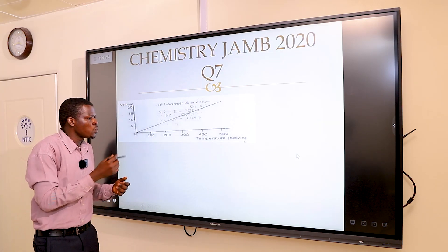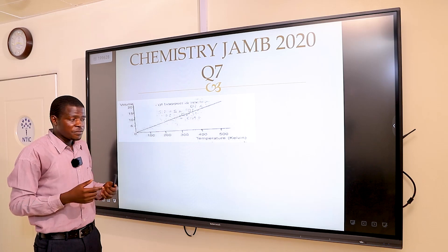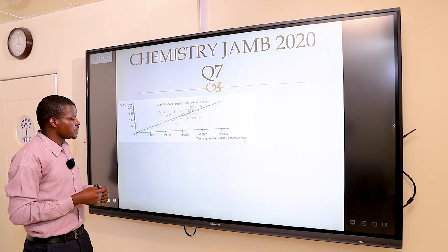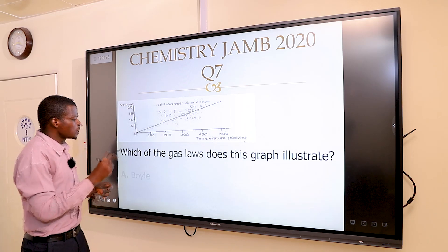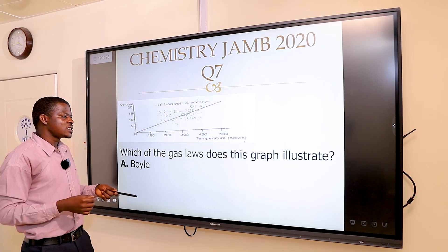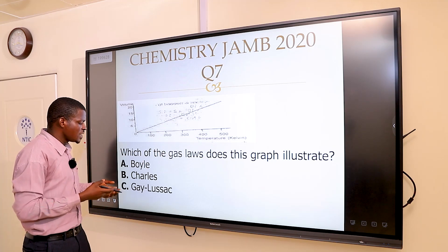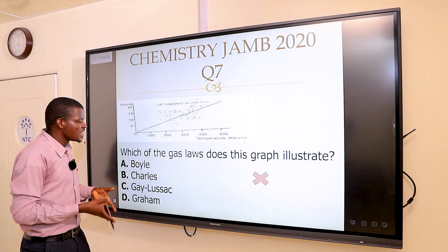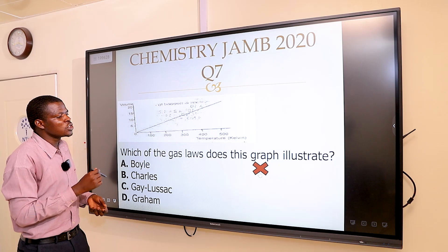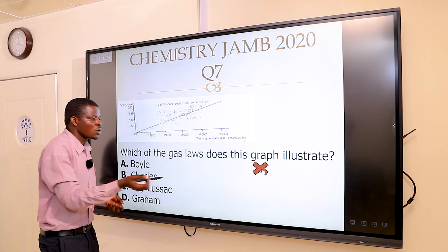The next question says: I was provided with a graph. The question says, which of the gas laws does this graph illustrate? A: Boyle, B: Charles, C: Gay-Lussac, and D: Graham. The first option is wrong. Boyle's law is wrong.